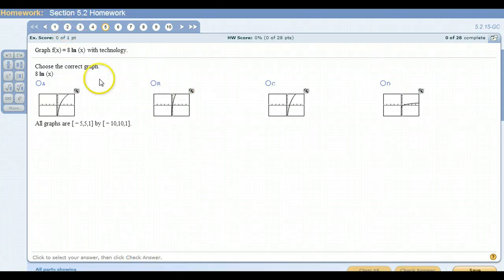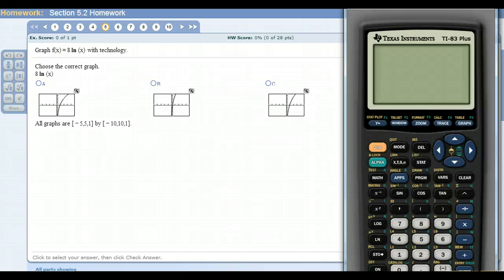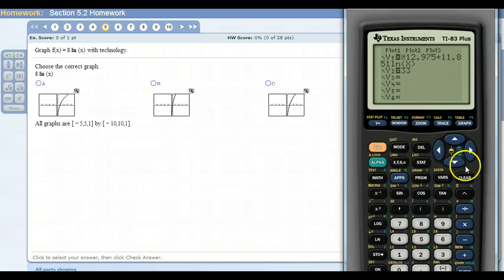This is the homework from 5.2. I just figured I'd show you a few examples of how to do some problems in this section. So this is f of x equals 8 ln x and they want us to graph it with technology. Notice they're giving us the window here. Always pay attention to that because your graph will never look like what they have if you don't adjust your window.